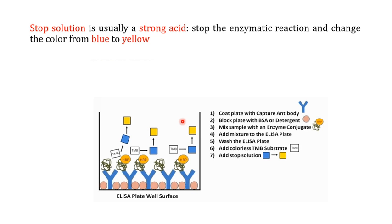In the next step you add a stop solution to block the interaction between HRP and TMB, stopping the enzymatic reaction. The stop solution is typically a strong acid. It does two things: it stops HRP from acting further on the TMB, and it converts the blue colored product into a yellow color.